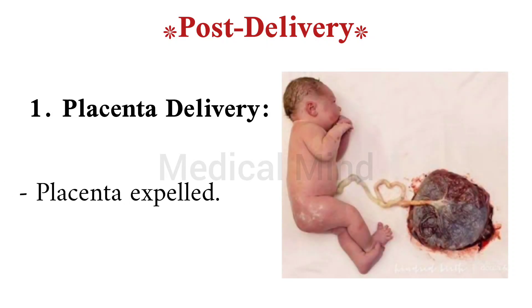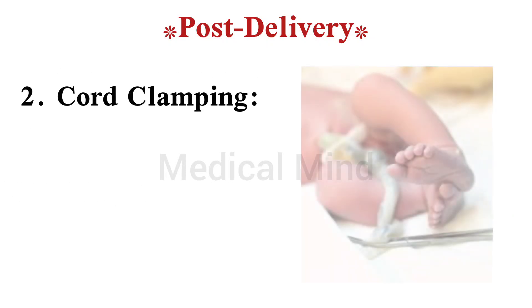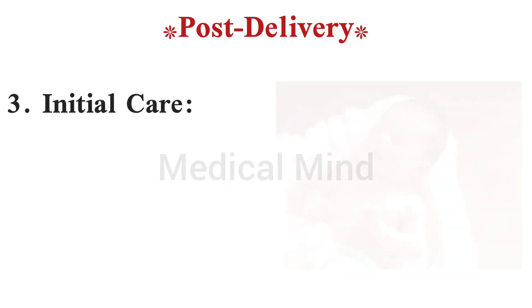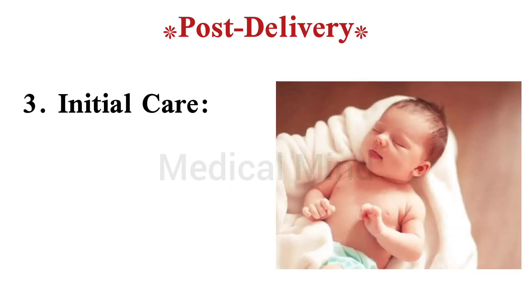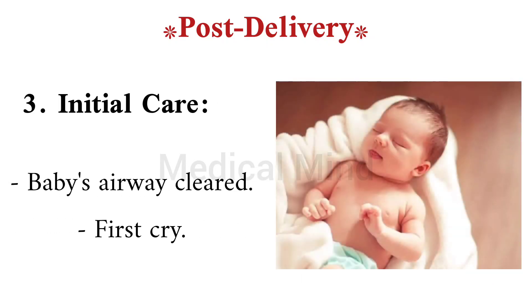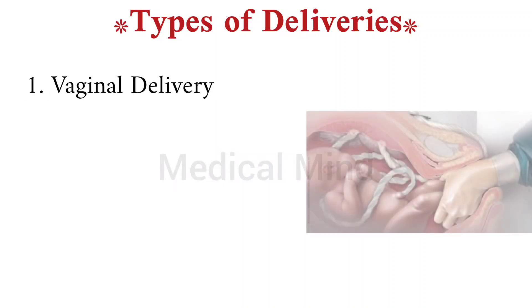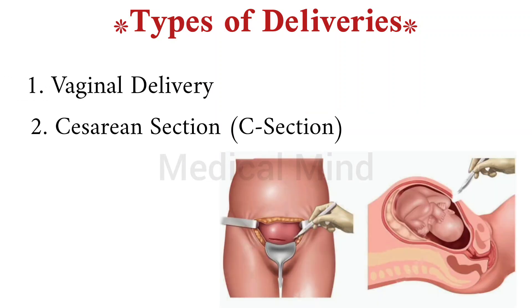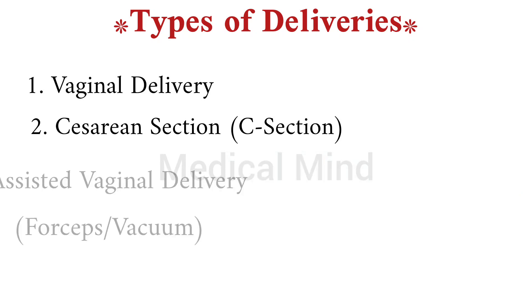Post delivery: one, placenta delivery — placenta expelled. Two, cord clamping — umbilical cord clamped and cut. Three, initial care — baby's airway cleared, first cry. Types of deliveries: one, vaginal delivery. Two, cesarean section (C-section). Three, assisted vaginal delivery — forceps or vacuum.